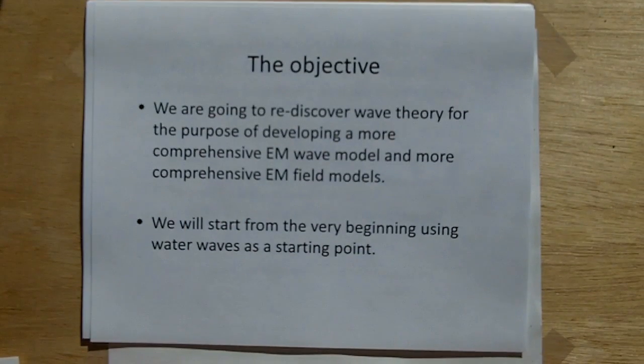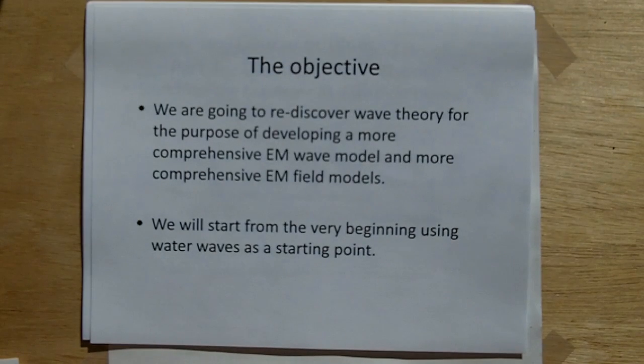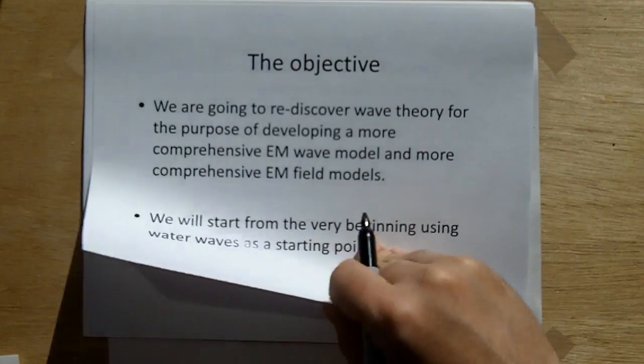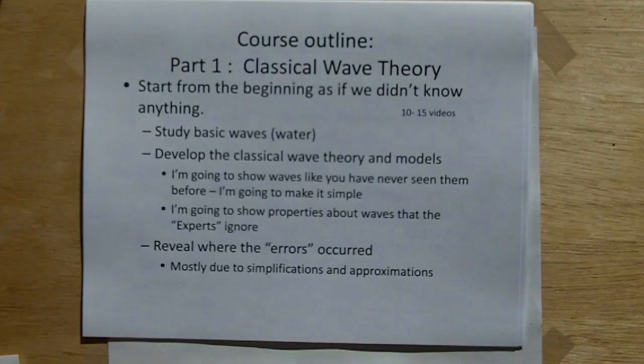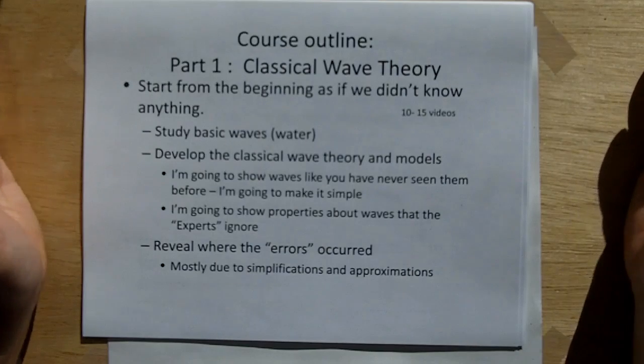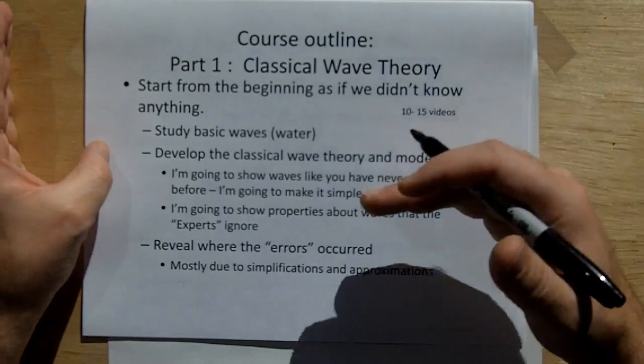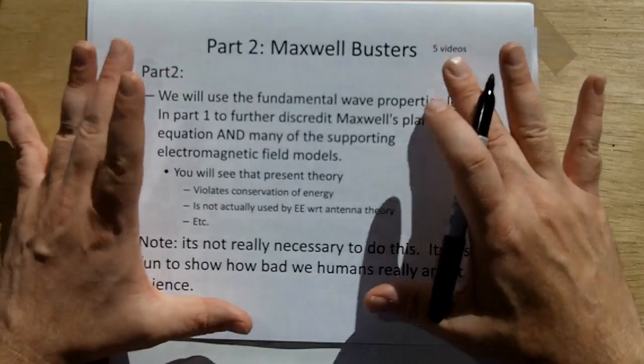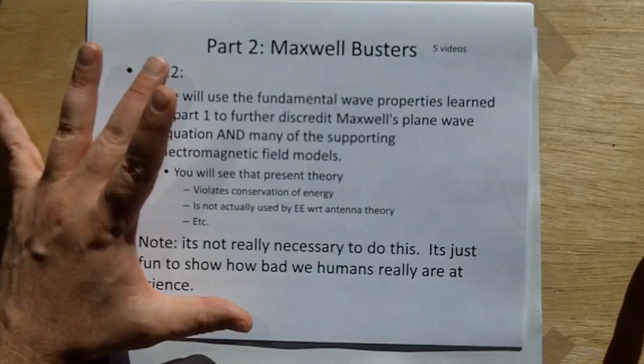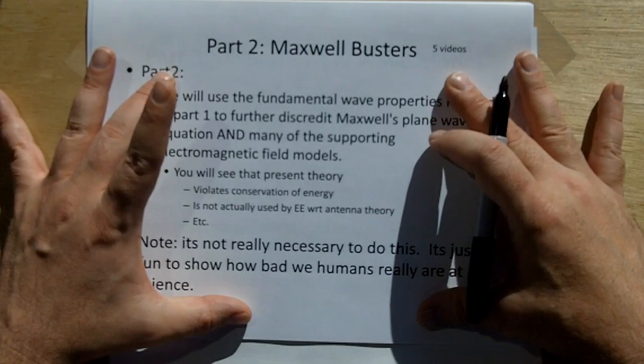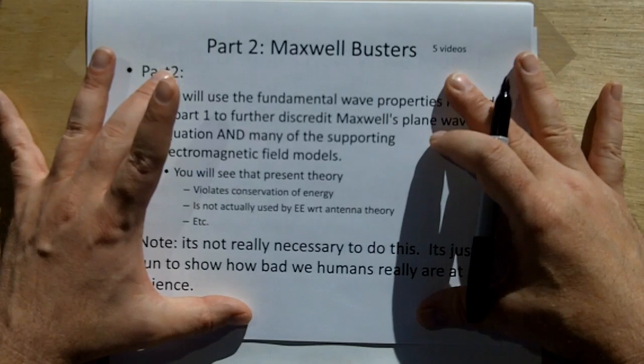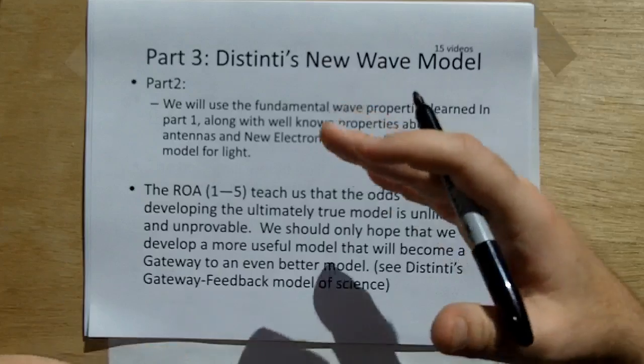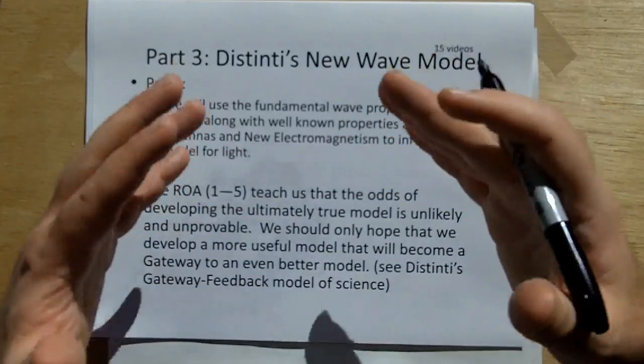So what we're going to do, the objective of this course is we're going to rediscover wave theory for the purpose of developing a more comprehensive electromagnetic wave model and, consequently, more comprehensive electromagnetic field models. We're going to start from the very, very beginning using water waves as a starting point. So the course outline is going to take, I think, about three or four parts. Part one, we're going to start from the beginning as if we didn't know anything. Part two, we're going to do Maxwell busters. I'm probably not going to do this. We're going to bust Maxwell as we go, like we did in the opening slides. From everything we learned, we're going to develop a new wave model by taking all the observed behaviors of waves and induce a mechanism which could cause that to be true.